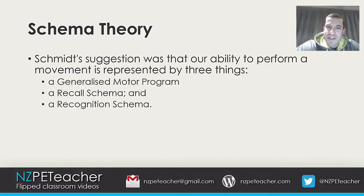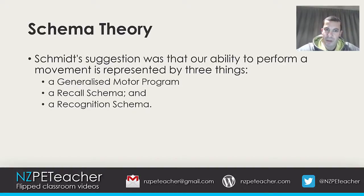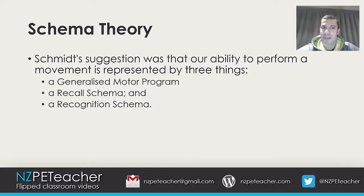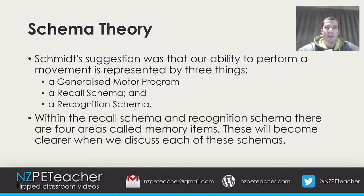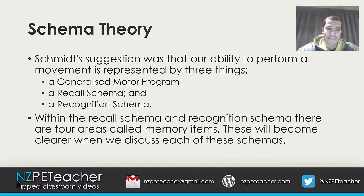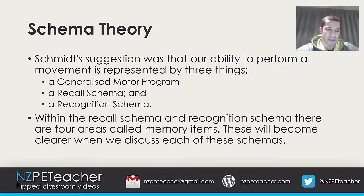Schmidt's suggestion was that our ability to perform a movement is represented by three things: the generalized motor program that we mentioned before, then a recall schema, and then a recognition schema. We're going to take a closer look at these three aspects in the next few slides. Within the recall schema and recognition schema, there are four areas called memory items, which will be highlighted in bold — they'll become clearer as we discuss each of the schemas.